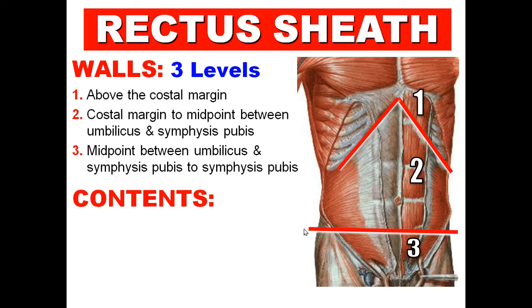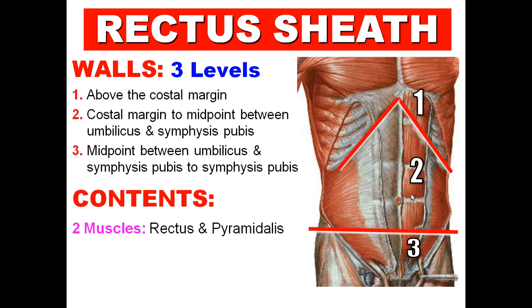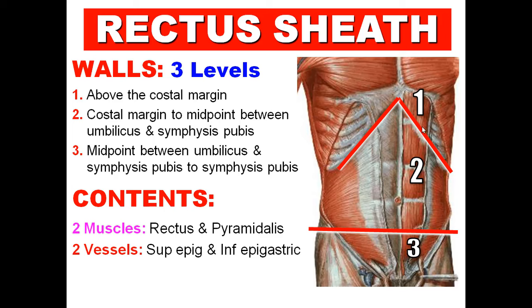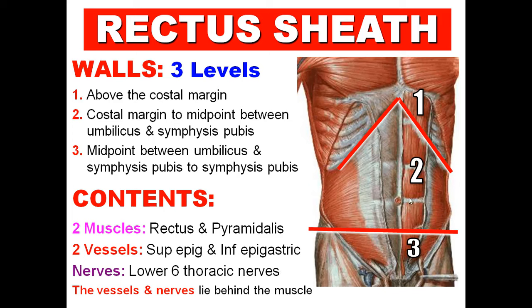Regarding the contents, the rectus sheath contains two muscles: the rectus abdominis muscle and the pyramidalis. Two blood vessels: superior epigastric vessels and inferior epigastric vessels. And the nerves: the lower six thoracic nerves, or lower five intercostal and subcostal nerves. The vessels and nerves are located behind the rectus muscle, so you don't see them here.